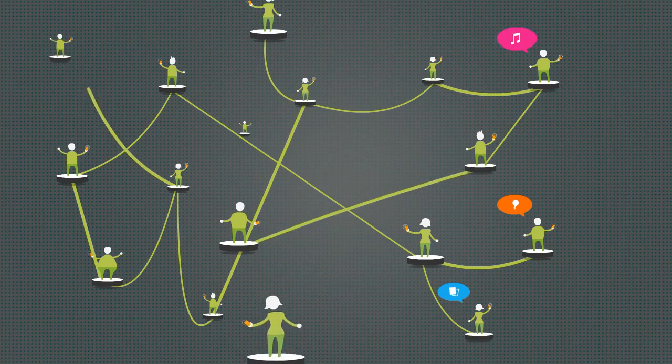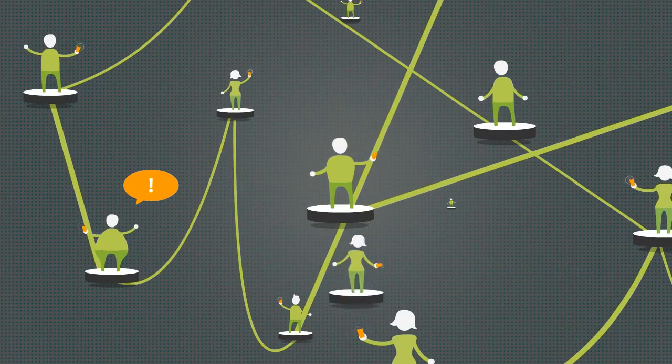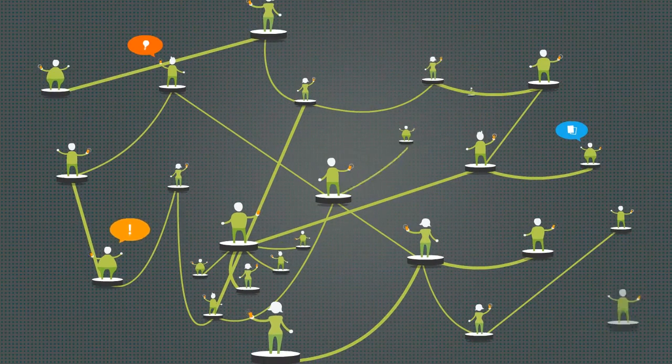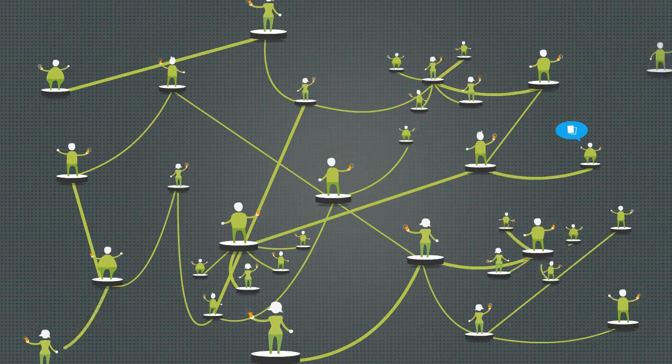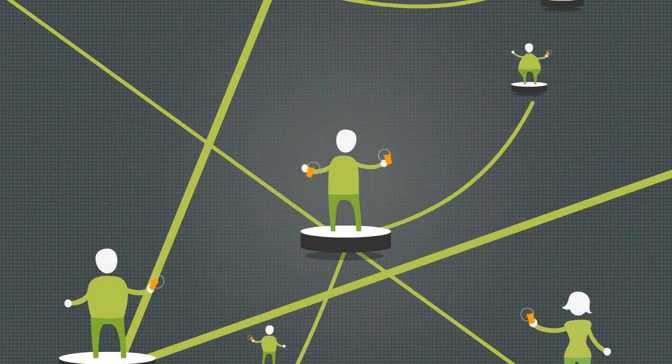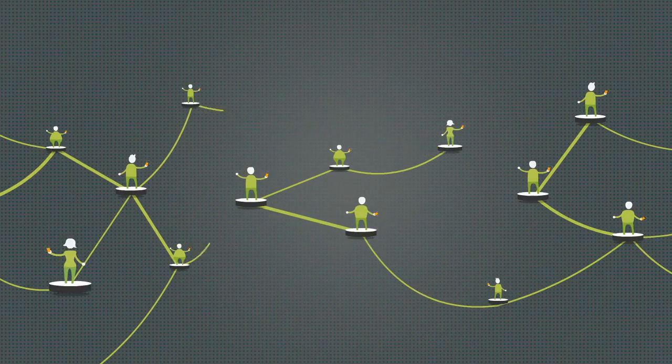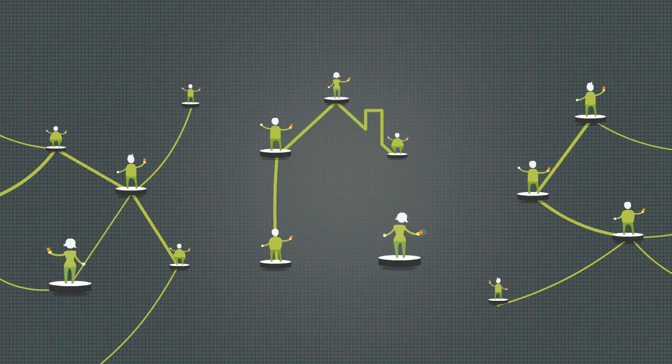We can help you predict churn and retain customers, acquire new customers and cross-sell or upsell with targeted viral marketing. We can also identify rotational churners with Itero fingerprinting. And we can help you target families or households, adding huge richness to your customer understanding.